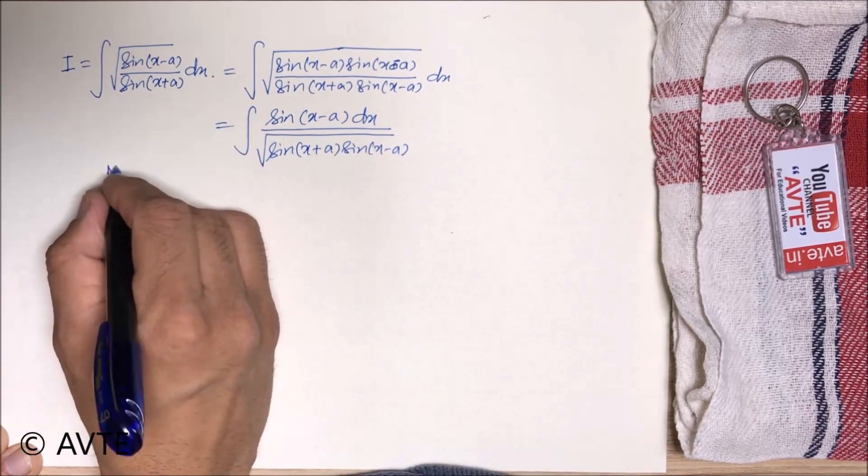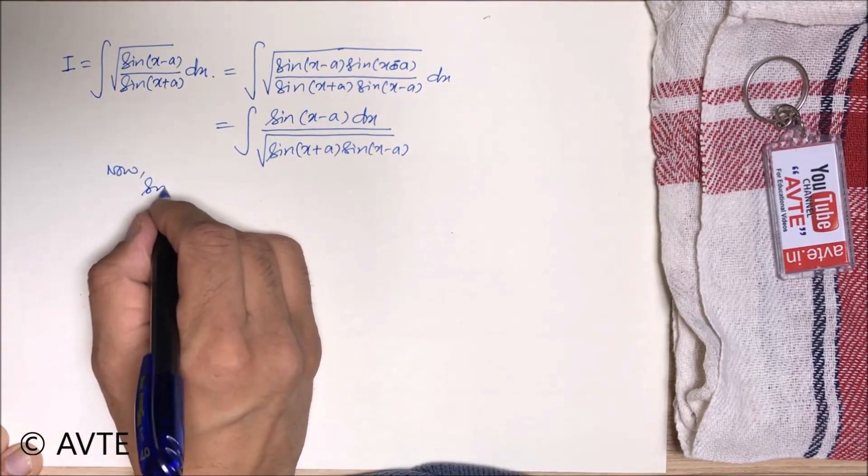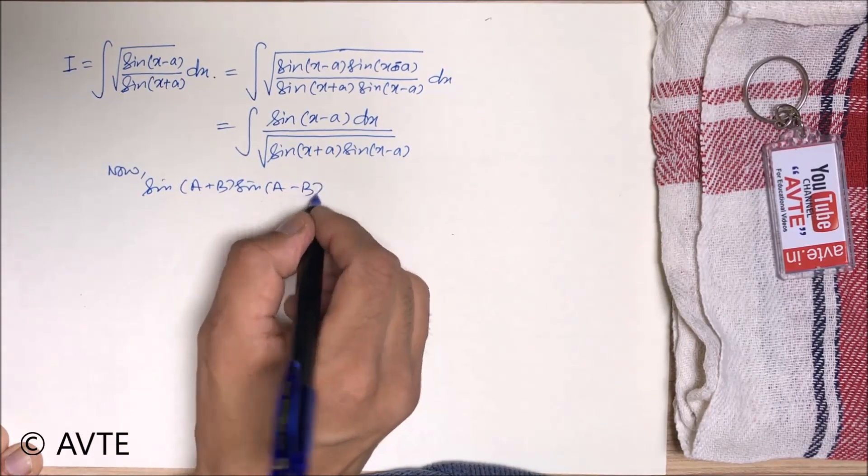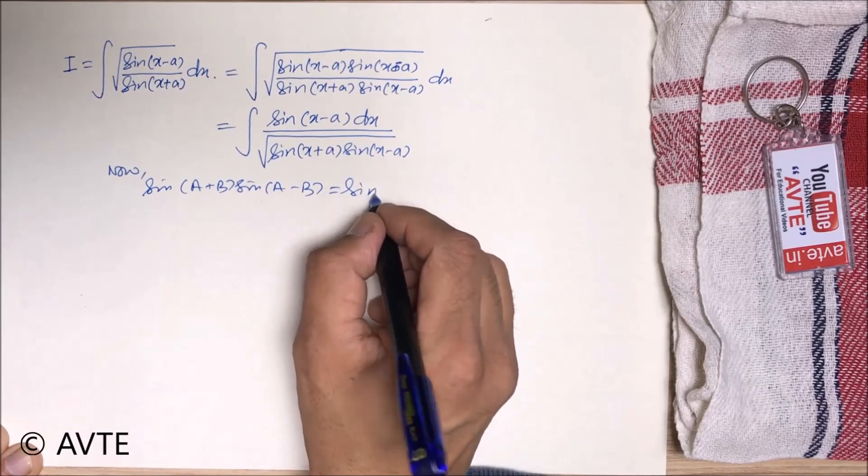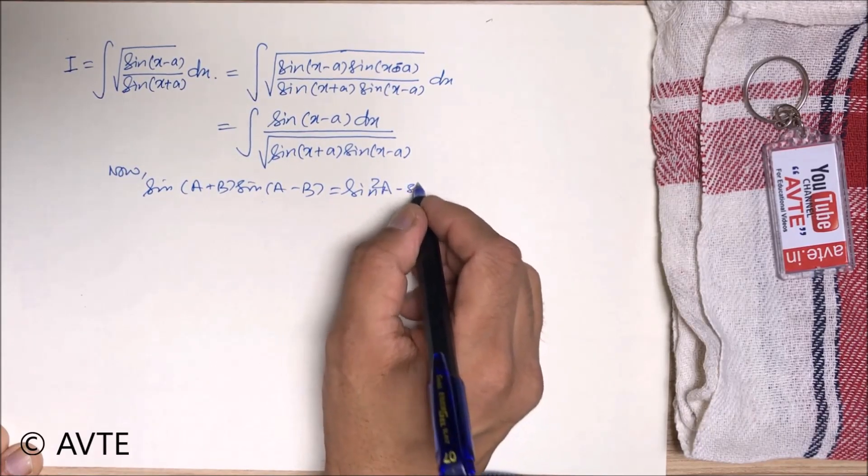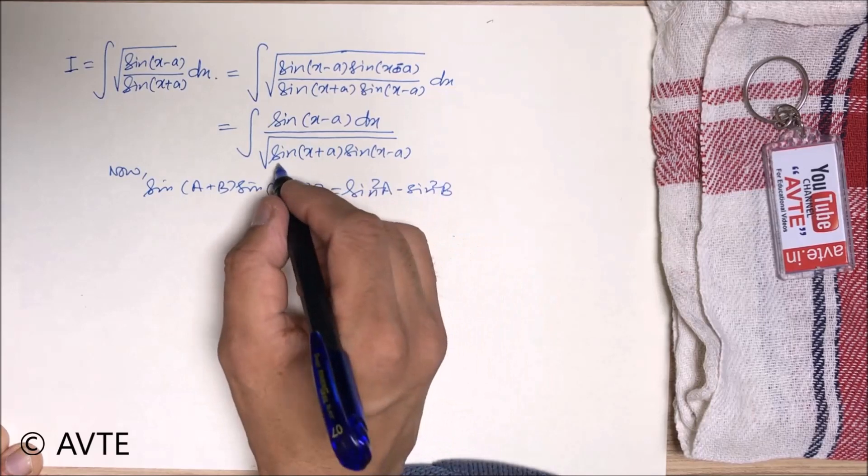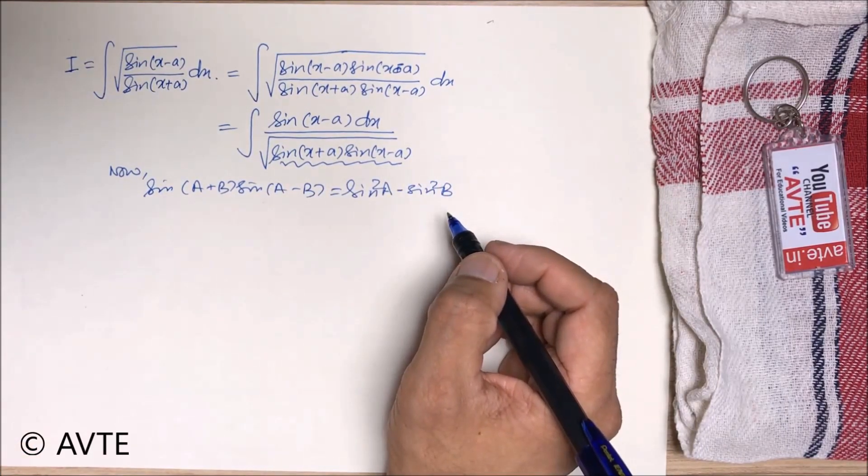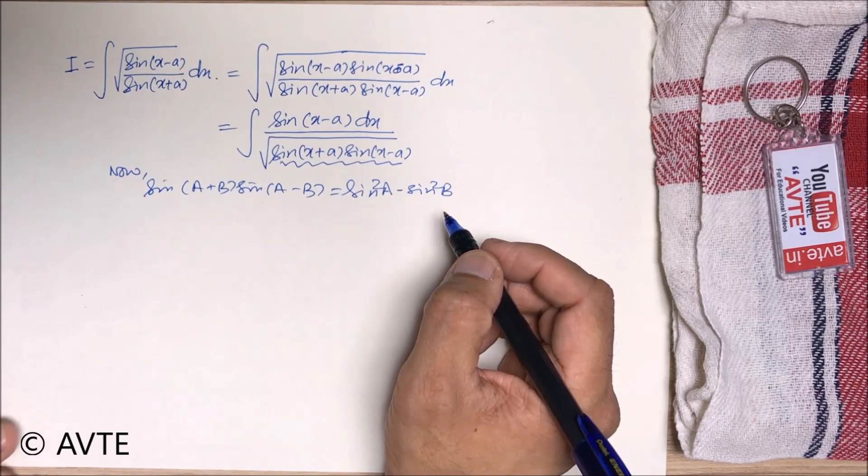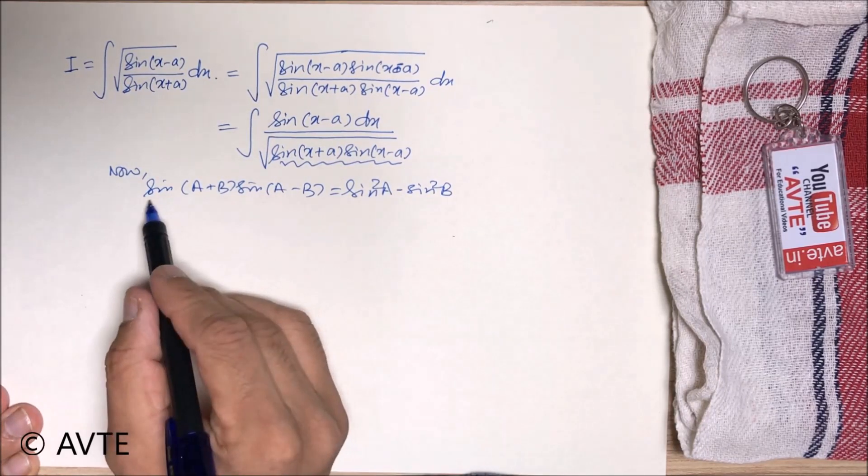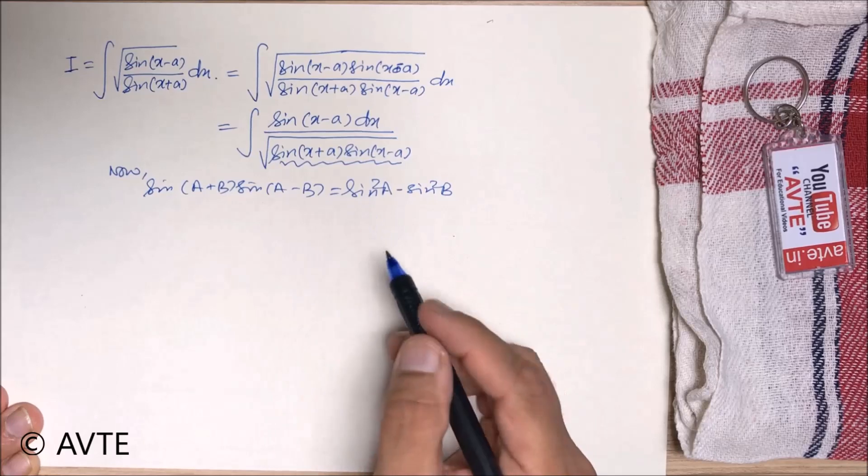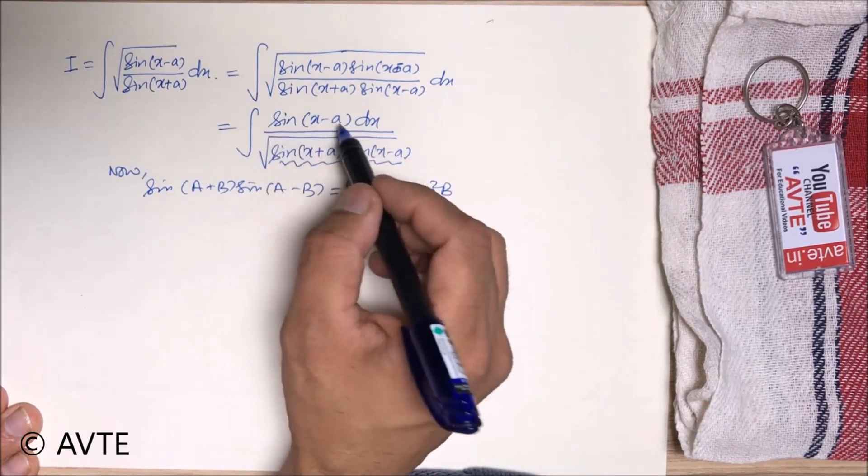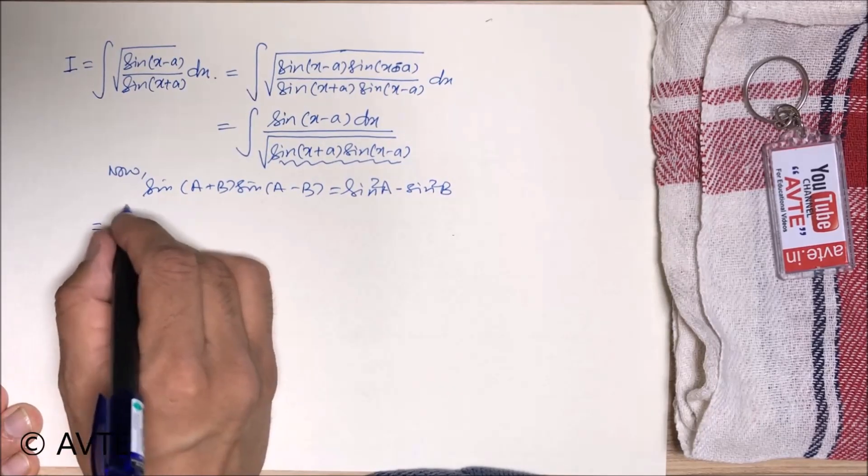Now do you remember the formula that sin a plus b into sin a minus b is sin square a minus sin square b. So in the denominator we will apply this formula. Instead of expanding product to sum we will apply this formula sin a plus b into sin a minus b as sin square a minus sin square b. And in the numerator we will open sin a minus b.